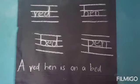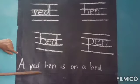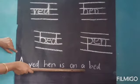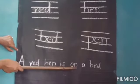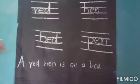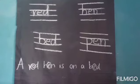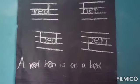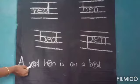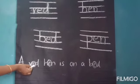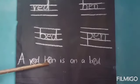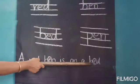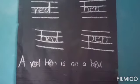Can you read the sentence? A red hen is on a bed. Children, circle the words with E sound. Bed — circle the E. Hen — circle the E. Bed — circle the E.